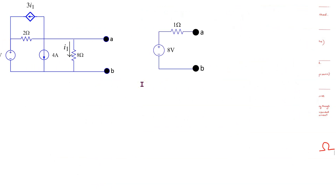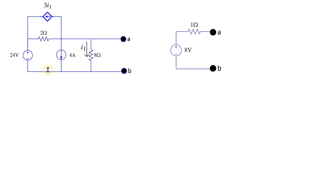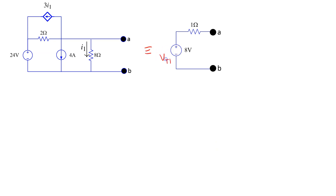This is the final summary result. This circuit containing one independent voltage source, one independent current source, one current controlled current source, and two resistors is equivalent — from the point of view of terminals A and B — to a circuit where V_Thevenin is 8 volts and R_Thevenin is 1 ohm.